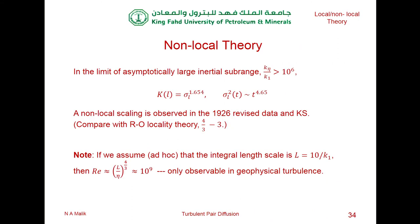The summary of the theory is this: in the limit of asymptotically large inertial subranges, we obtain results from a combination of theory and simulation. These have been observed both in the revised 1926 data and in kinematic simulations. As a note, if we assume the integral length scale is roughly ten times larger than the largest inertial mode, we get a minimum Reynolds number of about 10^9, which is why you cannot do experiments or DNS at this moment. We have to rely on observations in the atmosphere — we're talking about geophysical turbulence and larger.